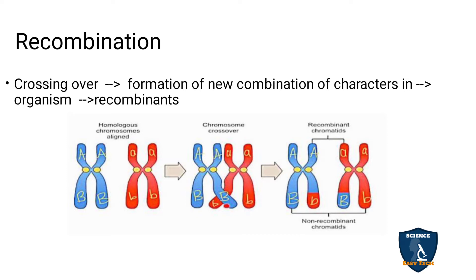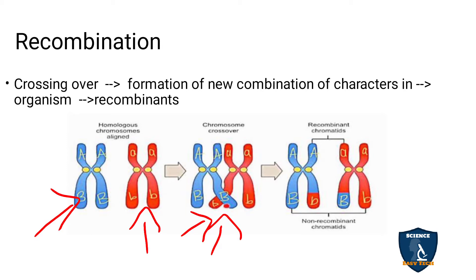You have come across the word recombination in crossing over and linkage. Due to crossing over, new combinations of characters appear — that is called recombination. Here you can see two different homologous chromosomes undergoing crossing over, where an exchange of chromosome segments takes place. After the exchange, the chromatids are separated, and the exchanged chromosome segments in the middle are called recombinants.